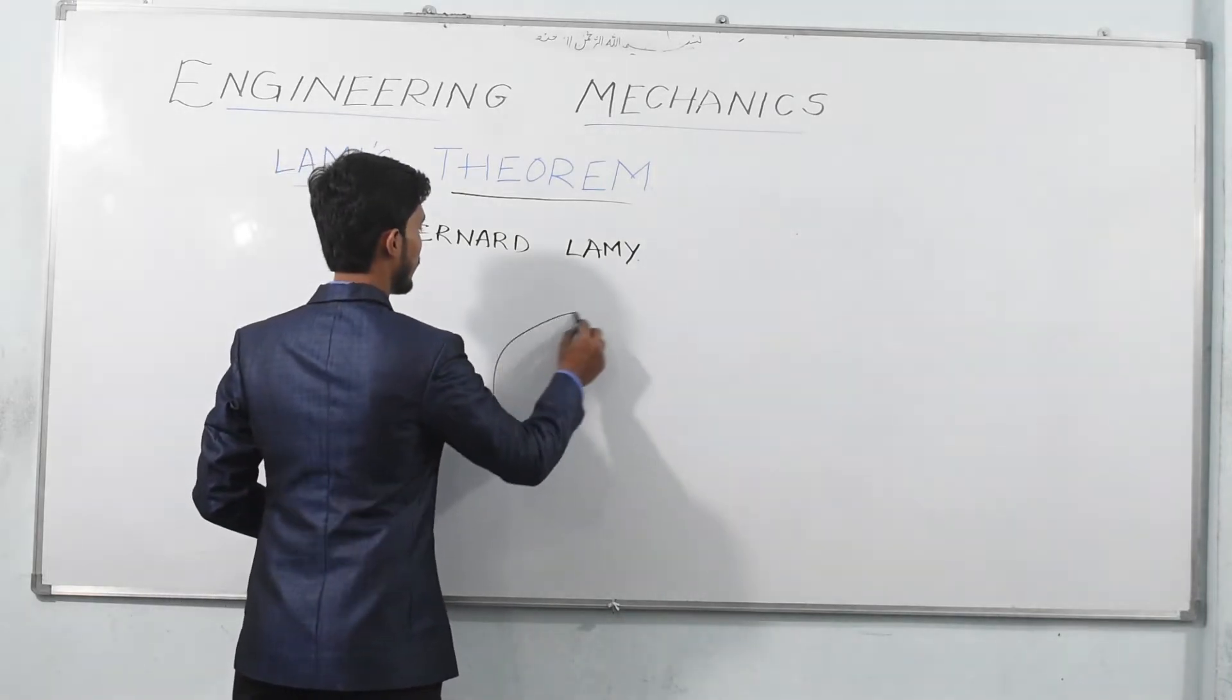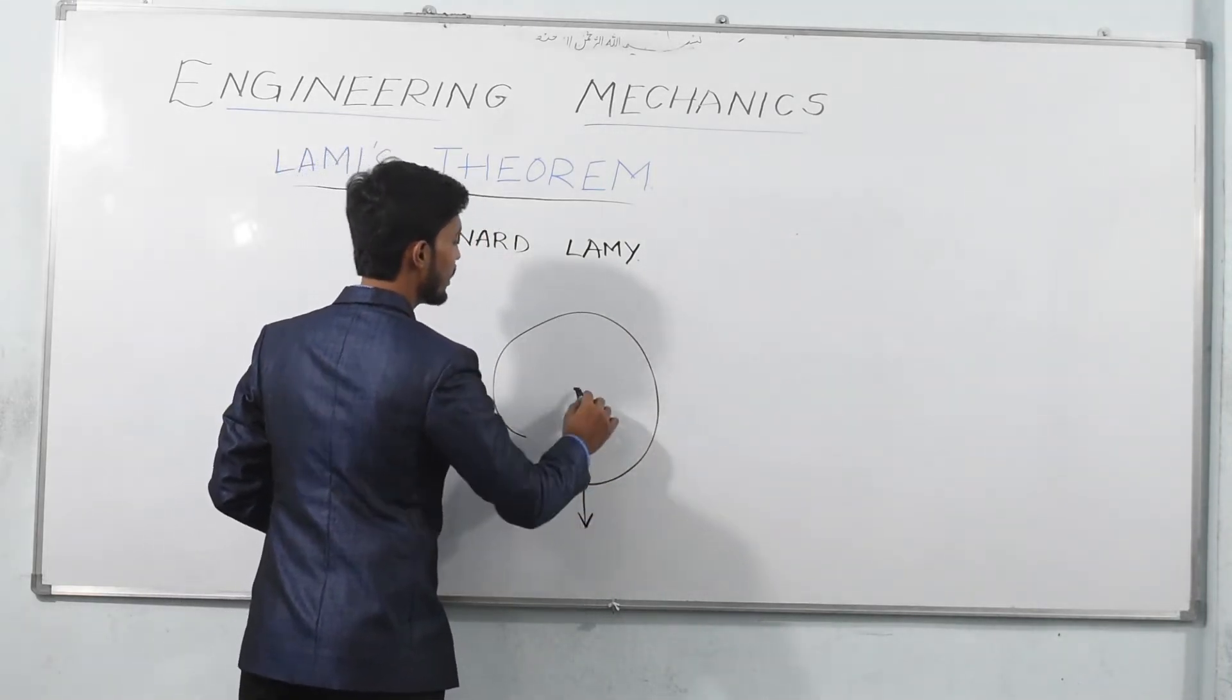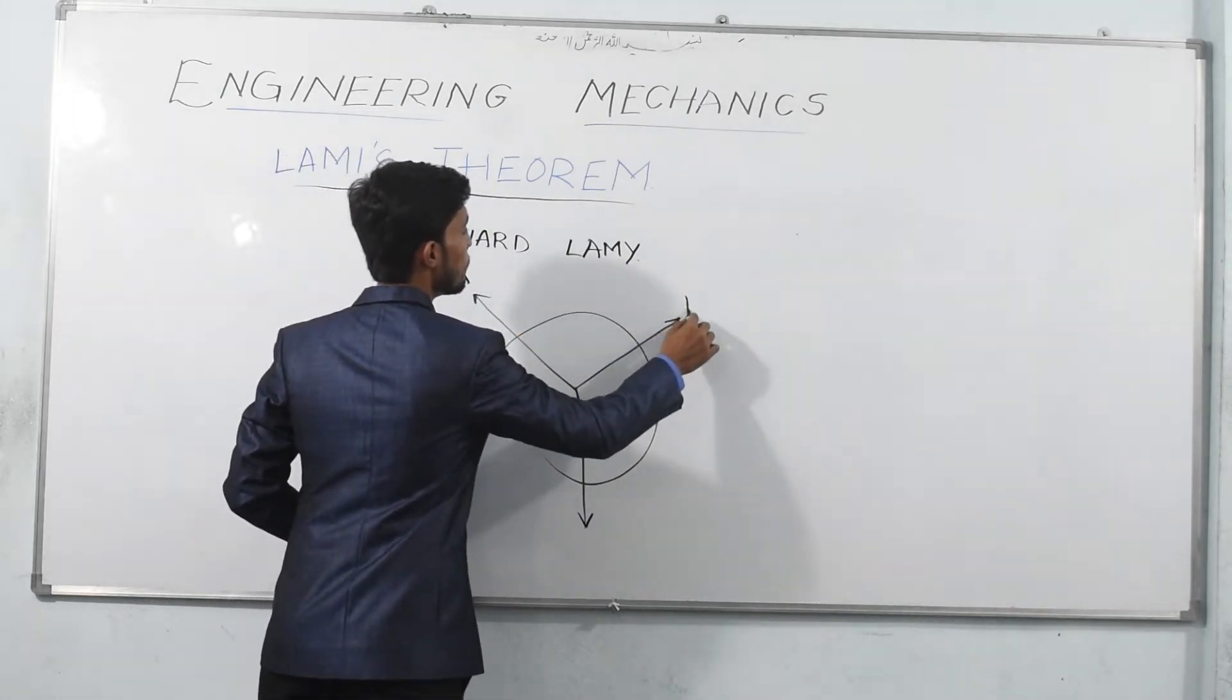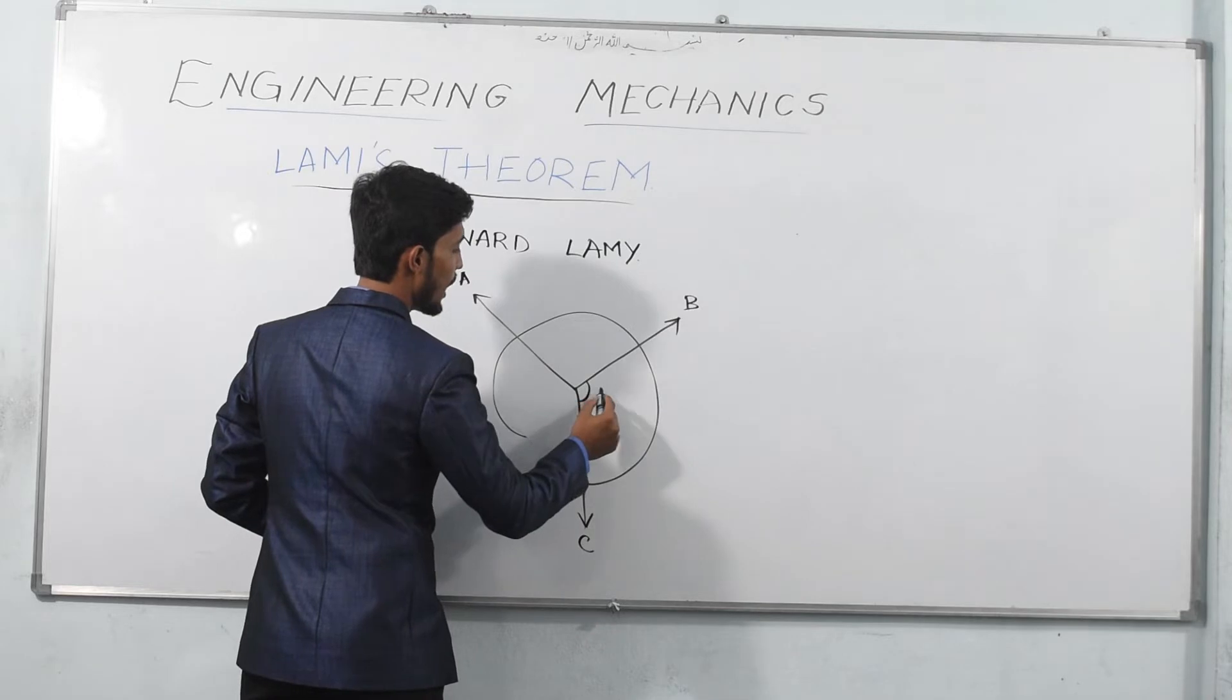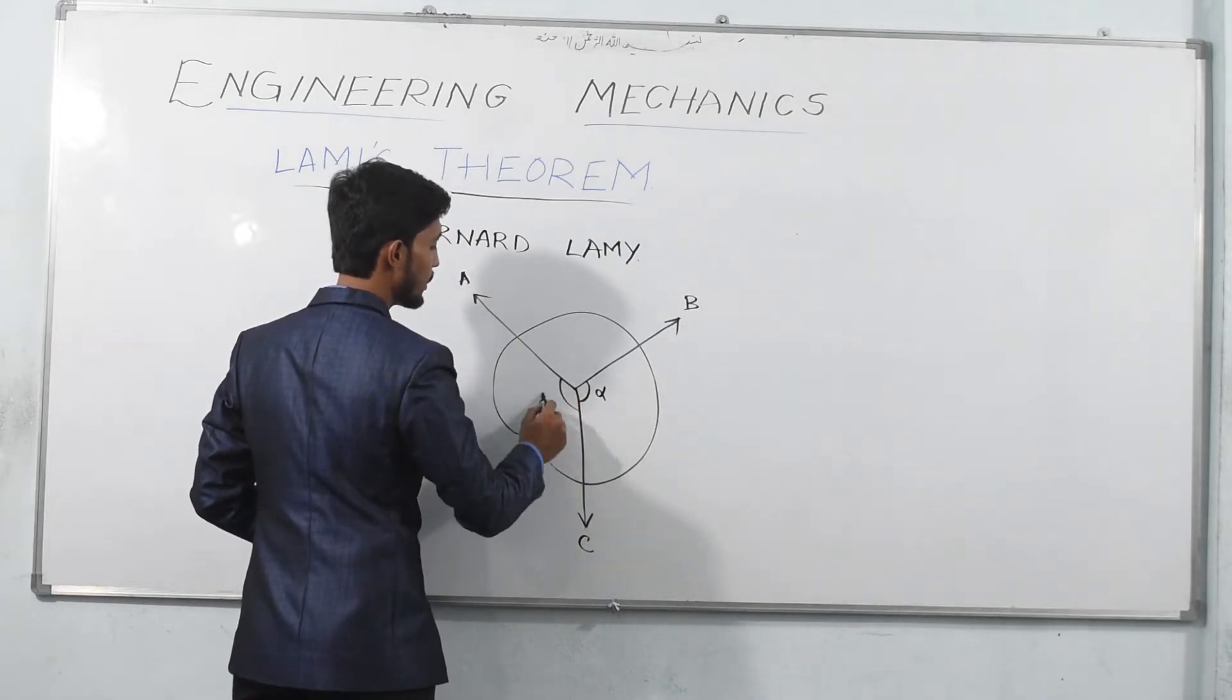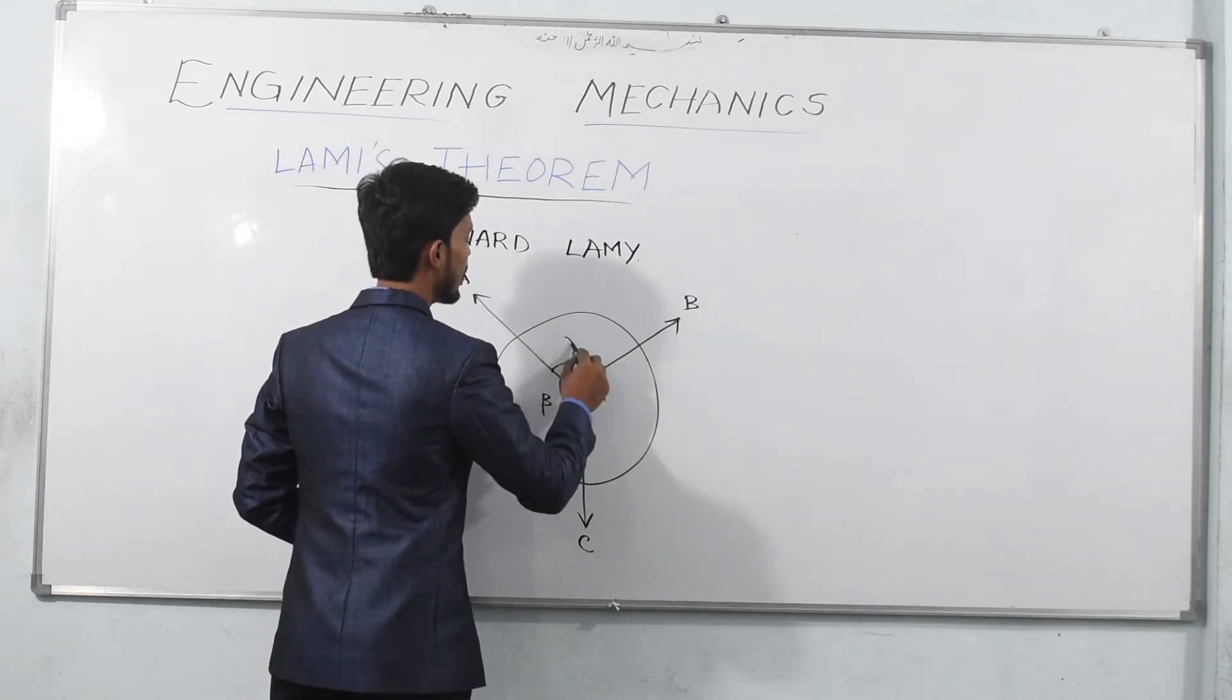So let us consider a body onto which there are three forces acting. Let me name them as A, B, and C. Angles between them would be: if I consider A, angle between B and C would be alpha. If I consider B, angle between B and C would be beta. If I consider force C, angle between A and B would be gamma.